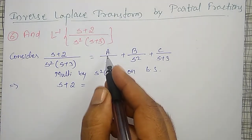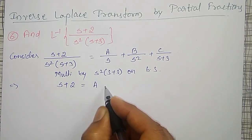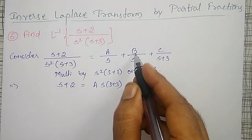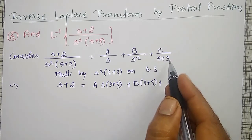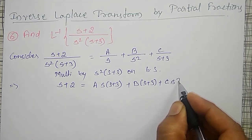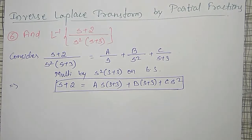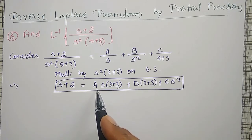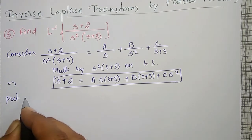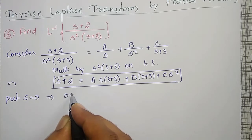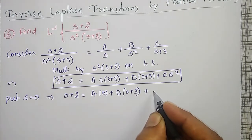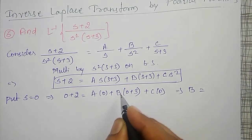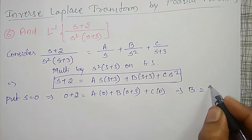Using this equation, I have to find the values of A, B, C. Let me put s=0 to get the value of B. Putting s=0: 0+2 = A·0 + B·(0+3) + C·0, which implies 3B = 2. Therefore B = 2/3.